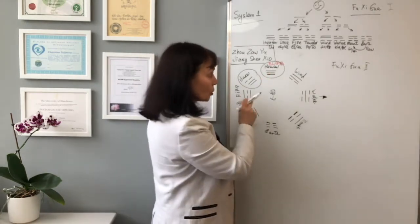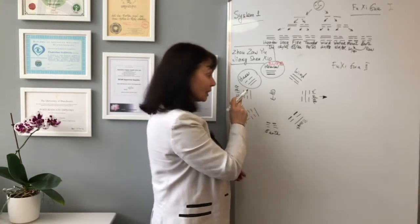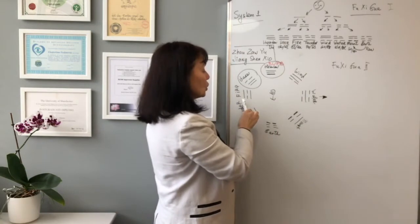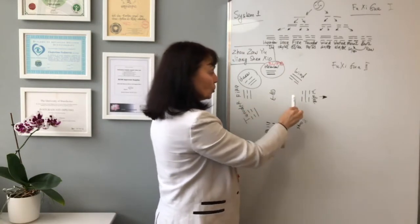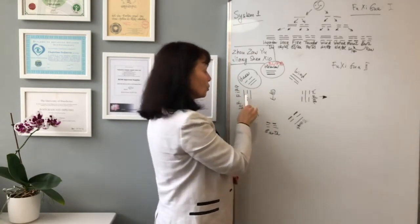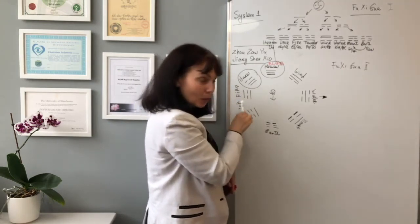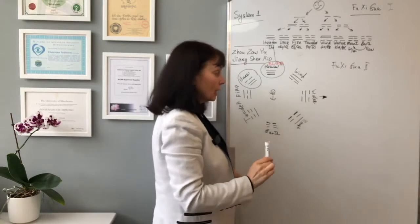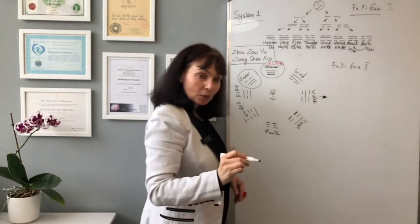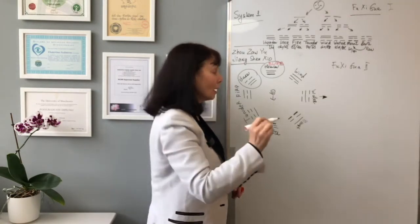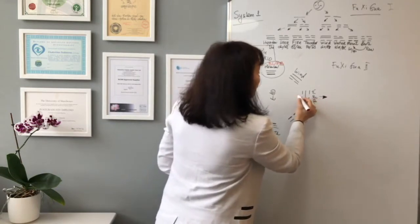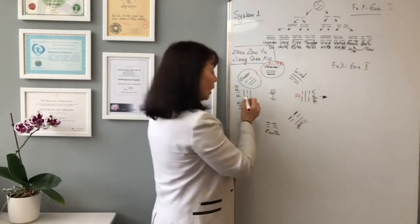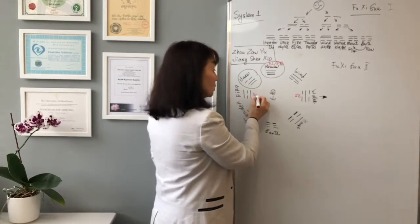And they referred the stomach meridian to the middle jiao. So which gua is yin and which gua is yang? One, two, three, four. This is the yin gua. One, two, three, four, five is yang gua. This stomach is the yang organ or yin? Yang. So this will be the stomach.